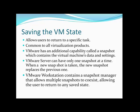VMware has an additional capability called a snapshot, which contains the virtual machine's data and settings up to that point. VMware Server can only have one snapshot at a time — when a new snapshot is taken, it replaces the previous one. VMware Workstation, however, contains a snapshot manager that allows you to create multiple snapshots that can coexist, so you can return to any saved state as long as you have a snapshot for it.